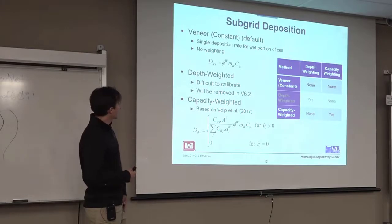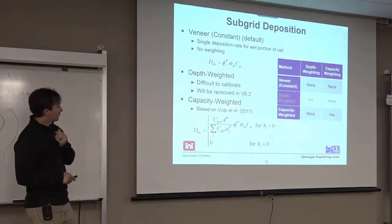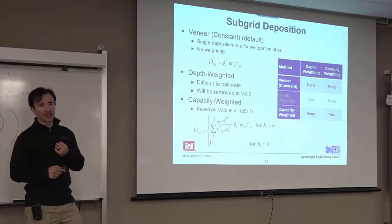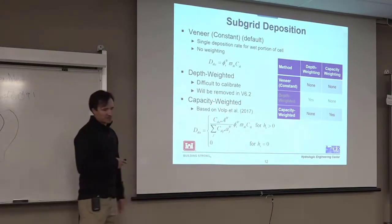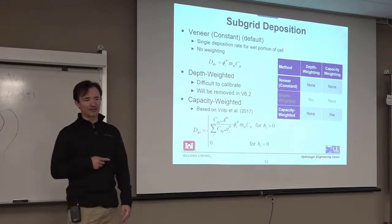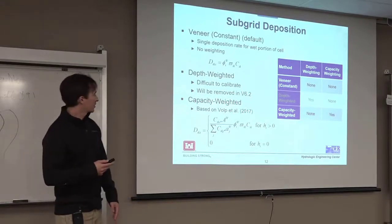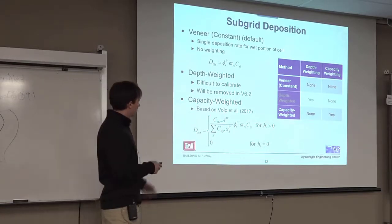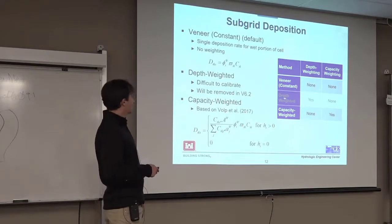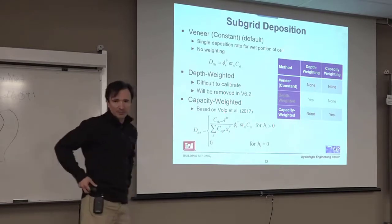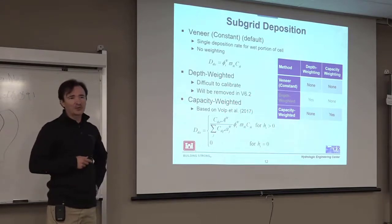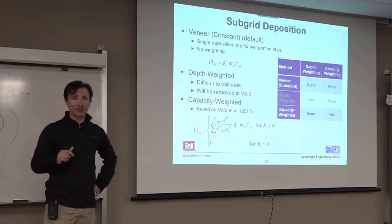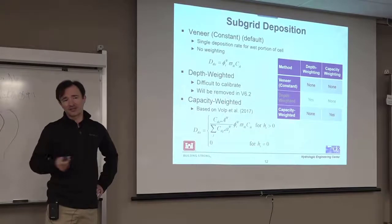And then every one of these also uses the bed gradations from that sub-area. Deposition's a similar deal where you have the veneer method and then capacity-weighted method. So Volpe is a student of Kassouli. She used a capacity-weighted method for deposition in her model for suspended loads. Because she didn't need that for bed load. And I followed a similar approach. It's a little bit different, but those are the two approaches. The depth-weighted one, I think I'm just going to remove for 6.2 because it's hard to calibrate. And we haven't exposed the empirical coefficients, so for the user, it's not even possible.